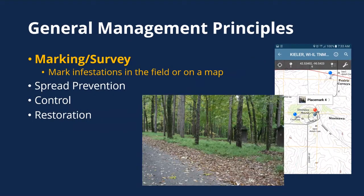Some general management principles when dealing with invasive species. The first is marking and survey. When you're finding invasive species, particularly new ones or infestations not yet widespread, it's very helpful to mark those in the field or on a map. That allows you to come back and find those infestations, get data on their size, show progress in reduction over time, prevent missing one, and re-find them in the field. Some kind of systematic survey — walking your land looking for new invasive species, focusing on areas with disturbance, high traffic, or edge habitats — helps you find things early.